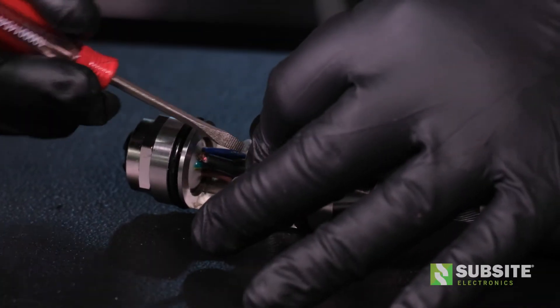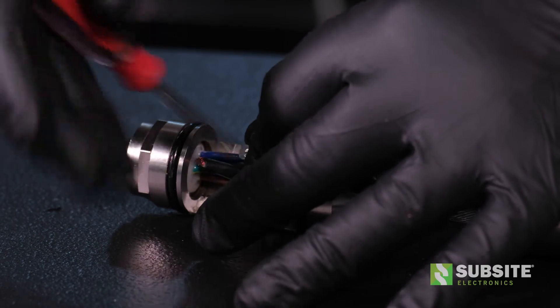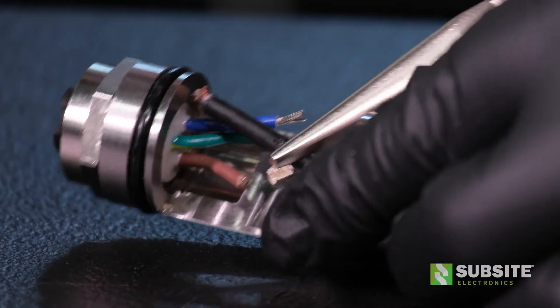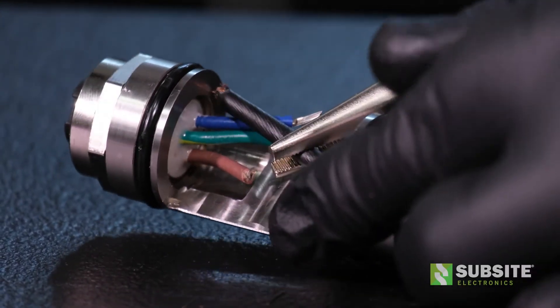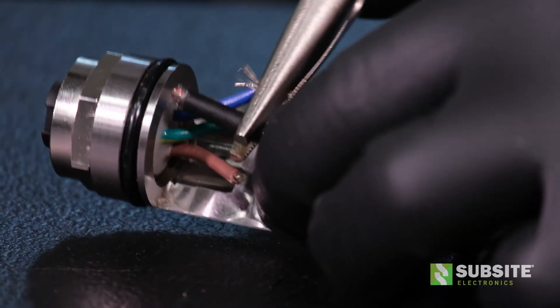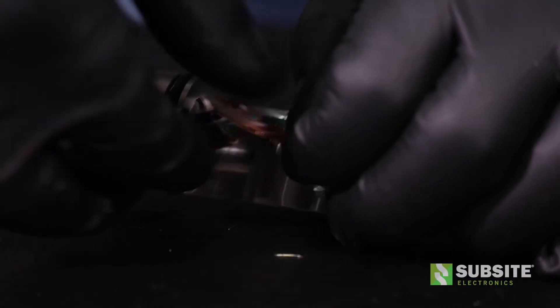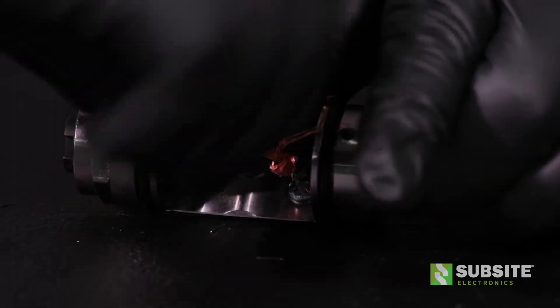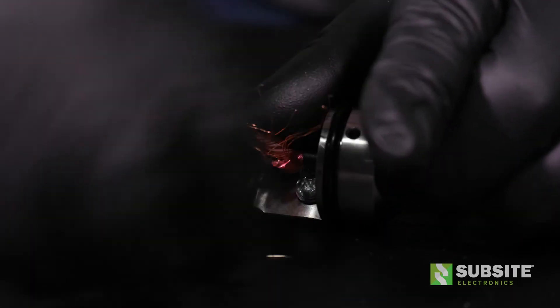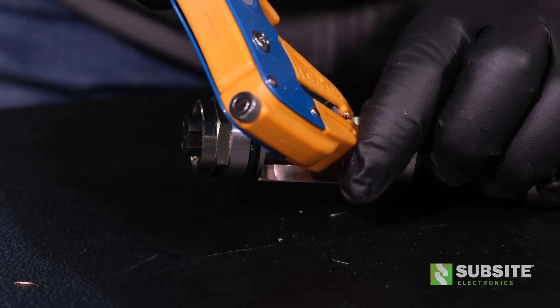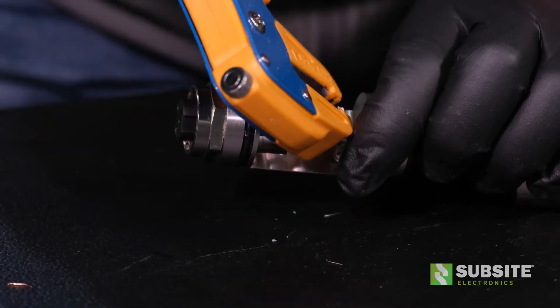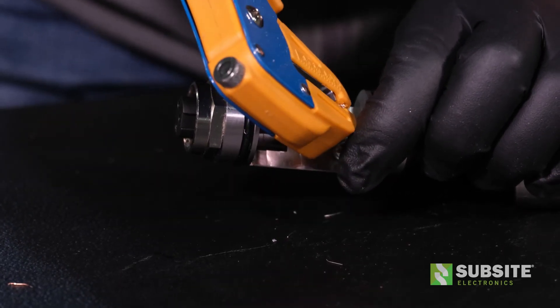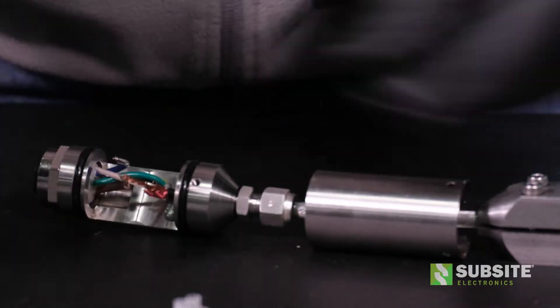Loosen the block screws to remove the terminal blocks from the bullet wires. To remove the black jacket, bend the cable at the score, then use the pliers to remove it. Separate the copper shield from the center conductor, then twist the copper shield together and trim any excess. Remove the center conductor jacket carefully using the 1.6 slot on the wire strippers. Twist the center conductor wire and trim any excess.